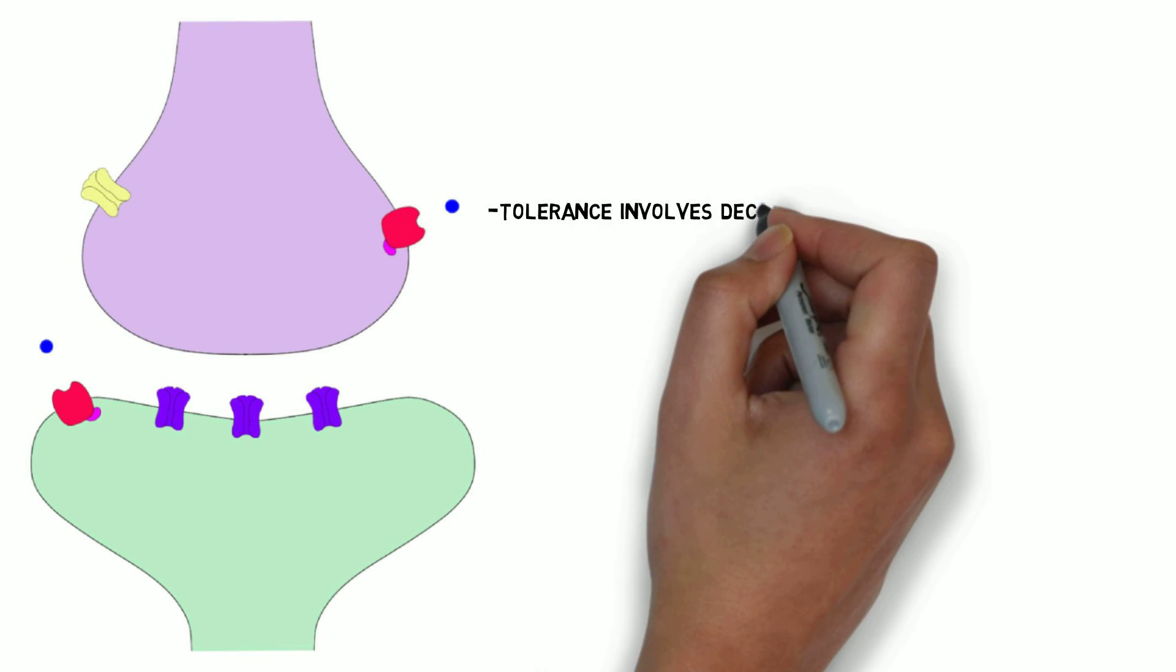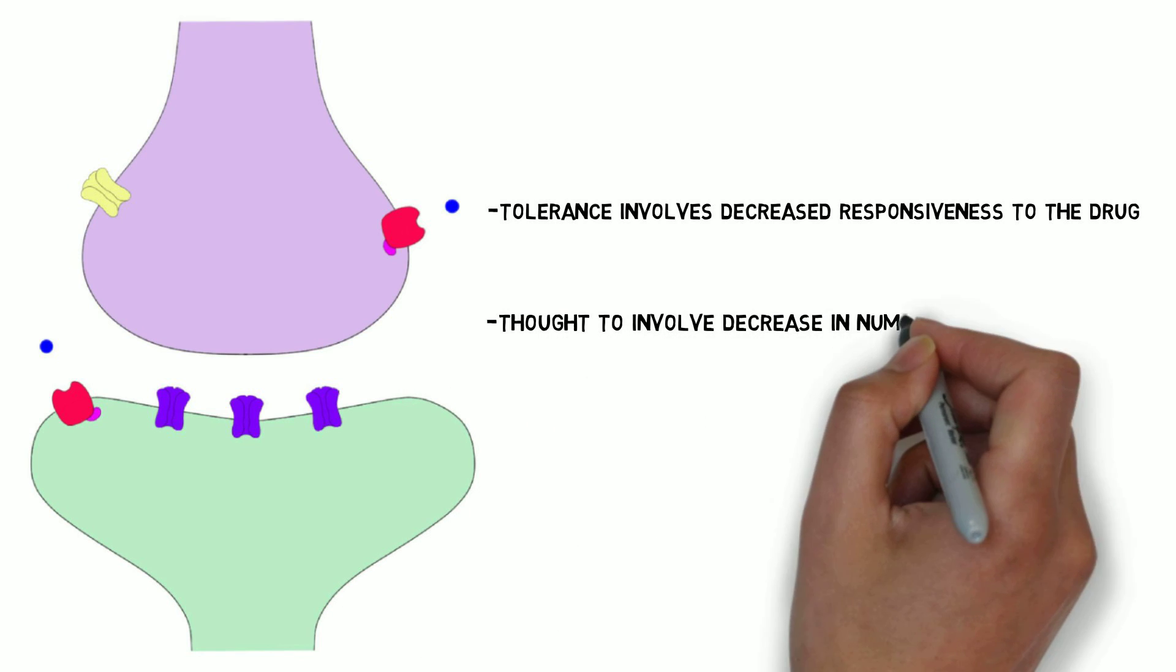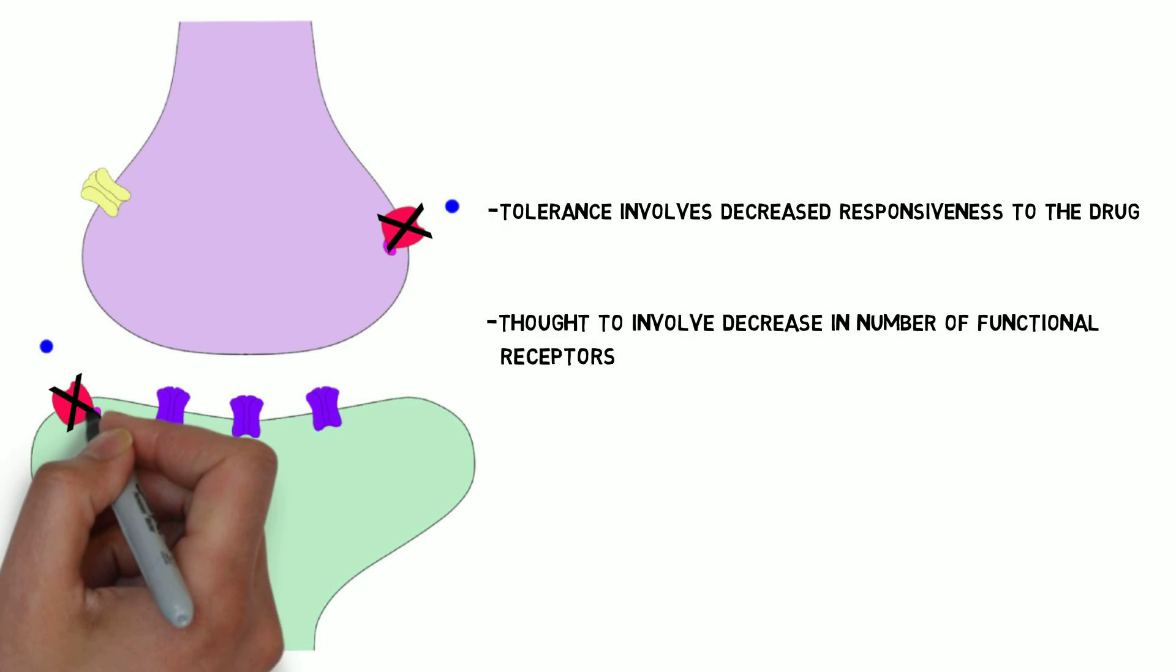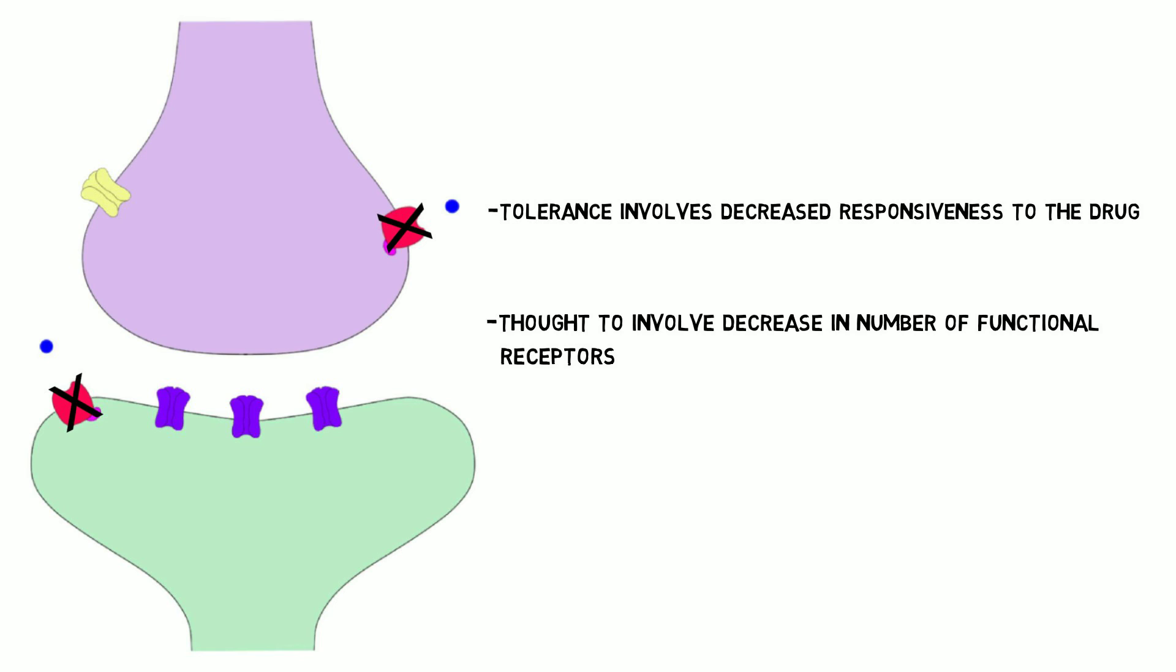Exposure to opioid drugs leads to tolerance, which involves a decreased response to the drug and a need to take more to produce the same effect. The mechanisms of opioid tolerance aren't fully understood, but they're thought to involve adaptive changes like a reduction in the number of functional receptors for the drug to act at.